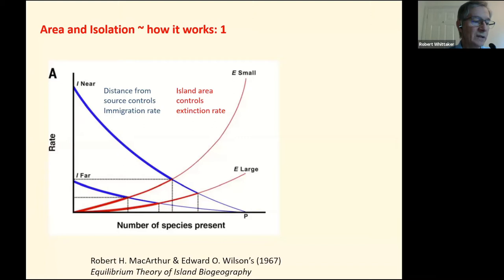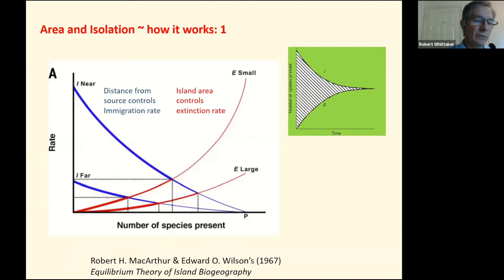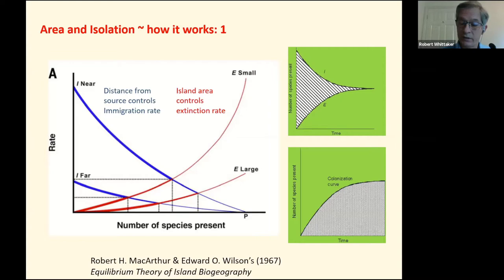So the two curves — the immigration curve and the extinction curve, labelled I and E — they eventually intersect. They move together to approach an equilibrium, as shown in these green boxes. If you integrate the immigration and extinction curves, taking just one of each from the left-hand box, you get the colonization curve. So the number of species on an island through time should increase in a simple way towards an equilibrium. Extinction rate rises more slowly the larger the island, as larger islands have more space and more resources. In a nutshell, that is MacArthur and Wilson's equilibrium theory. They did also consider speciation in situ on the island as an important additional mechanism for creating diversity on islands.